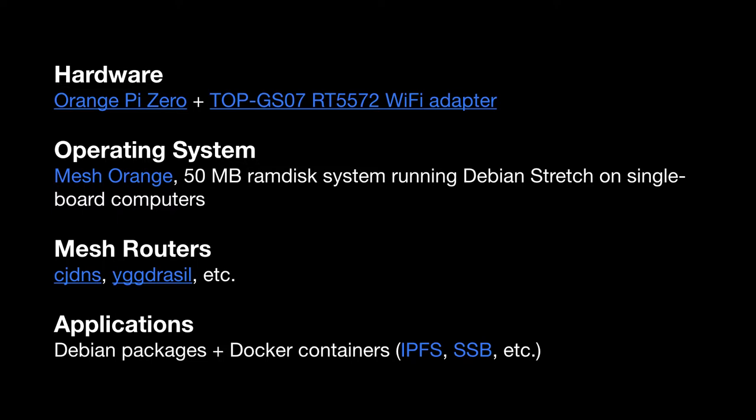To build a mesh network you need a mesh protocol — software to tell nodes to relay and forward traffic for one another. Mesh communities often debate which protocol to use, and they keep changing. New protocols come out, new versions appear. So why not build a platform where it's easy to prototype and expand? This project uses CJDNS and a CJDNS-like protocol. At the application layer — the peer-to-peer apps — we can use anything packaged as a Debian ARM package or a Docker container.